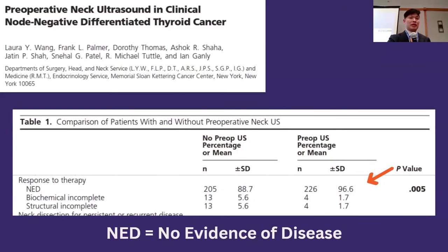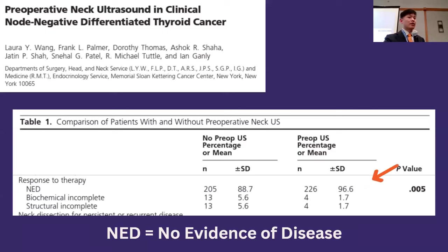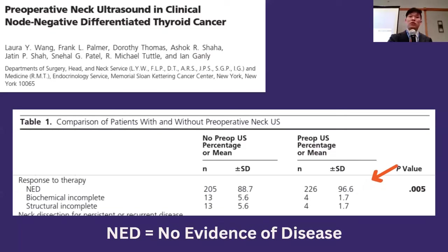A paper from Memorial Sloan Kettering shows that having a neck ultrasound makes a big difference in whether you have a good response to therapy. Patients who had no good preoperative ultrasound versus those who did: NED, no evidence of disease, was achieved in 96% of patients who had an ultrasound compared to 88% who did not. When you have a good ultrasound telling you what the lymph nodes are, you can act on them and make sure you're treating things adequately.